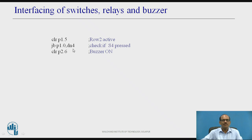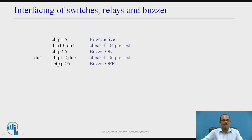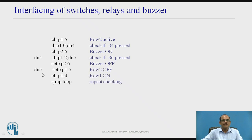JNB P1.0 checks if S4 is pressed. If S4 is pressed, CLR P2.6 turns the buzzer on. Then JNB P1.2, DN5 checks if S6 is pressed. If S6 is pressed, SETB P2.6 turns the buzzer off. At DN5, SETB P1.5 deactivates row 2, CLR P1.4 reactivates row 1, and SJUMP LOOP continuously checks S1, S2, S3, S4 and S6, taking the appropriate action.